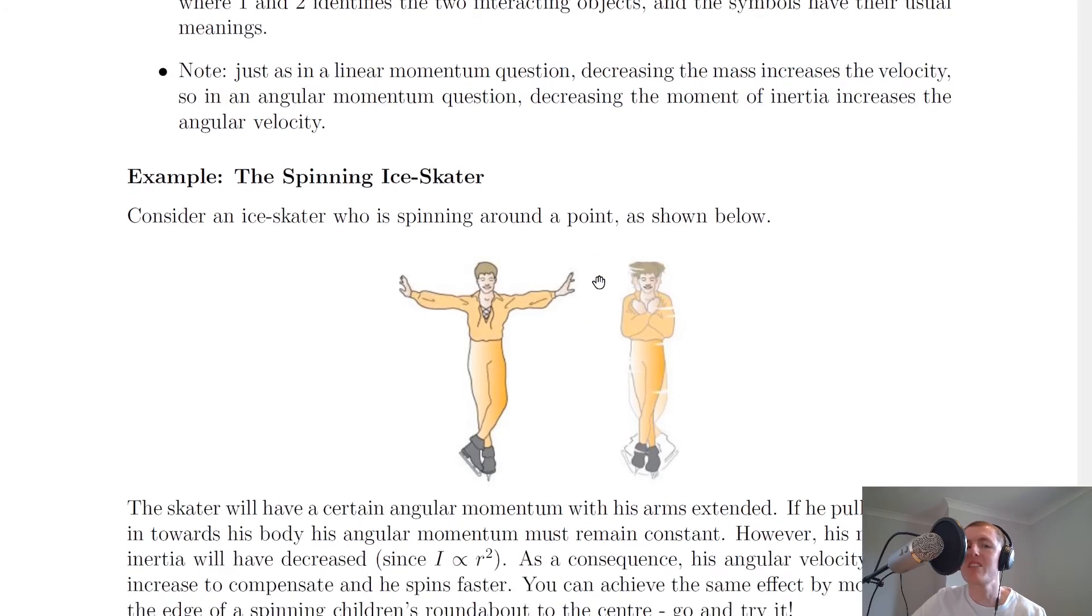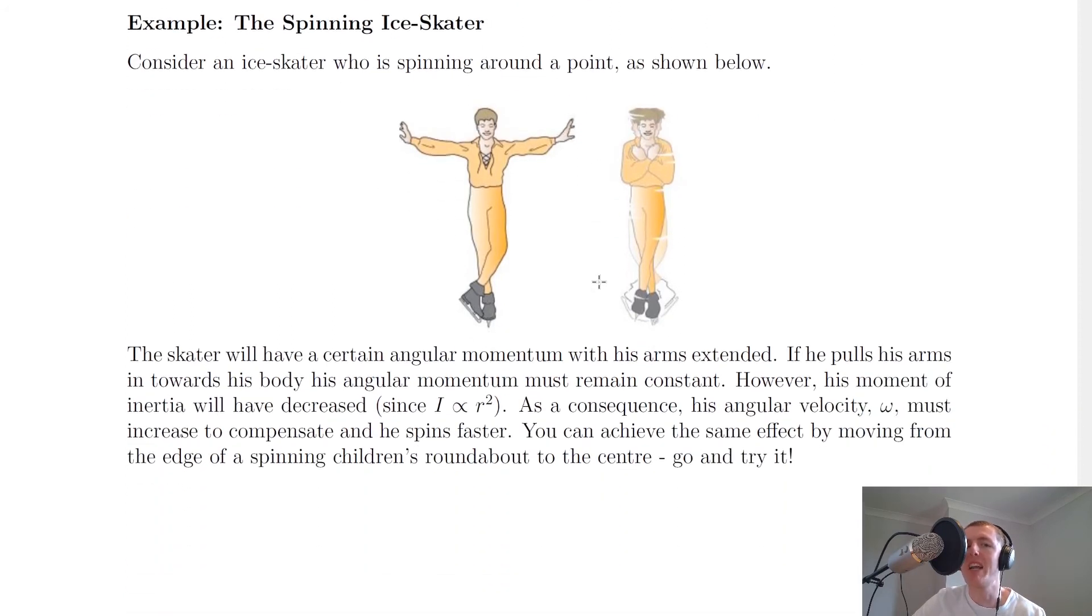To put this into context, let's look at a specific example for an ice skater, the spinning ice skater. Consider an ice skater who is spinning around a point as shown below. Initially, his arms are extended.